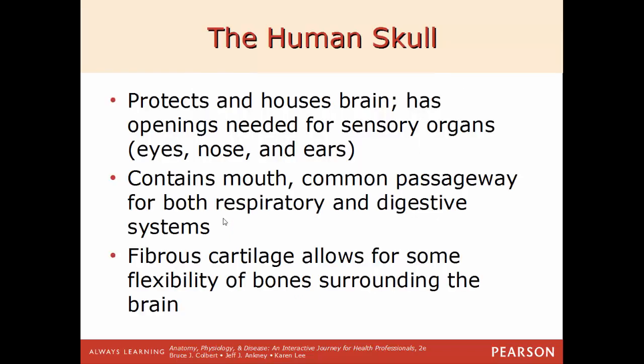Now we'll move on to the human skull. It protects and houses the brain and has multiple openings for different sensory functions — such as the eyes, ears, and nose. It also has the mouth, a common passageway for both the respiratory and digestive systems. It also contains some fibrous cartilage that allows for some flexibility with bones around the brain.